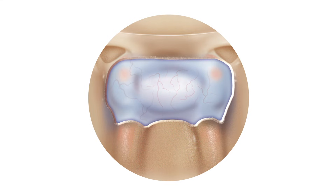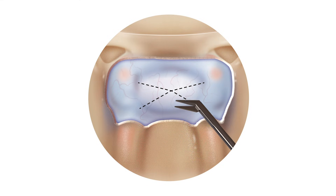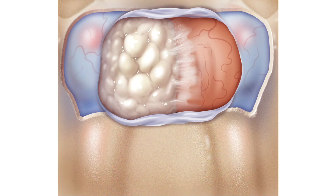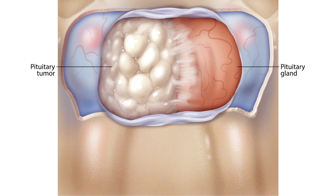After the dura has been widely exposed, we perform our cruciate dural opening. We use micro-scissors to open the dura in a cruciate fashion up to the level of the medial wall of the cavernous sinus. After widely opening the dura, we start identifying the difference between the pituitary gland, which looks well vascularized and more orange-like, from the pituitary tumor, which is less vascularized and more whitish or pale in appearance.